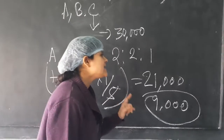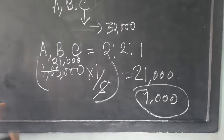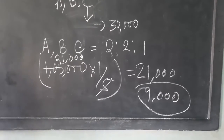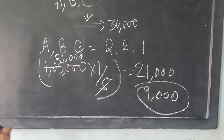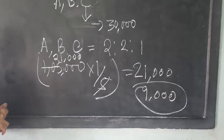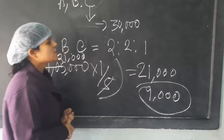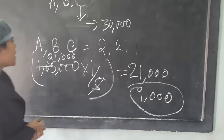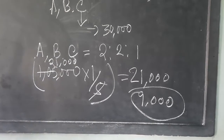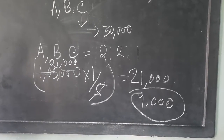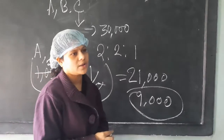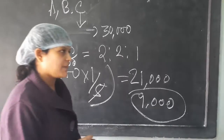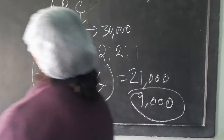So this is the key concept: in the case of a guaranteed partner, whatever they are entitled to get as per the partnership deed has to be provided by the other partners of the firm — there is no question of denying it. I have given one example where C's share as per the profit sharing ratio comes to 21,000, but this deficiency of 9,000 must be borne by A and B by sacrificing from their profit share.